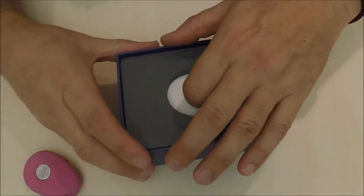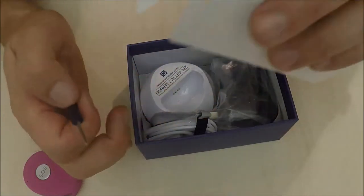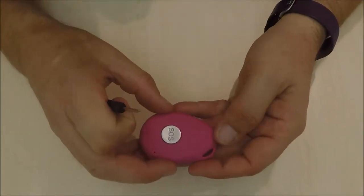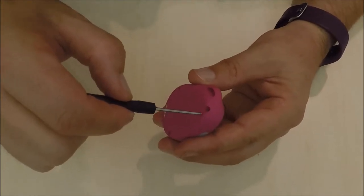When you take the pendant out of the box, have a look inside and there should be a screwdriver. On the back of the device are three screws and we'll undo those three screws.